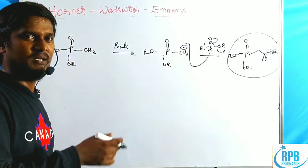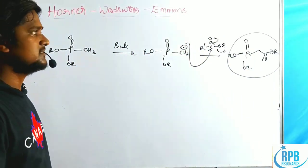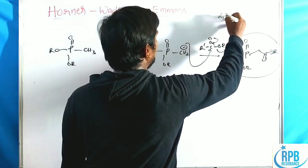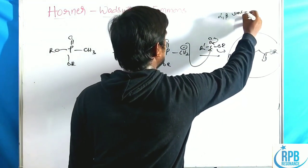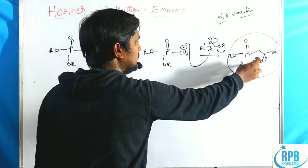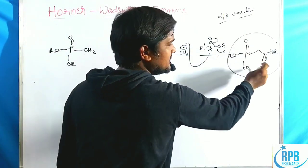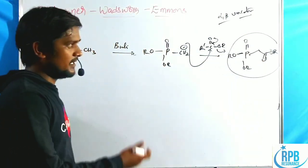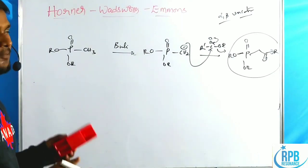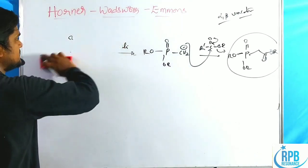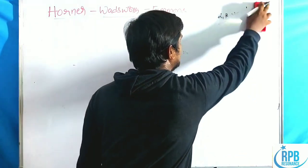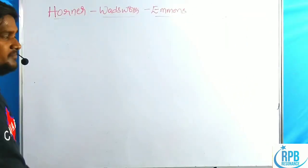Alpha-keto phosphonate esters — these may be esters, ketones, or aldehydes. The main advantage of the HWE reaction is the preparation of alpha-beta unsaturated carbonyl compounds using these phosphonate reagents. Now let's go through the simple mechanism of the Horner-Wadsworth-Emmons reaction.